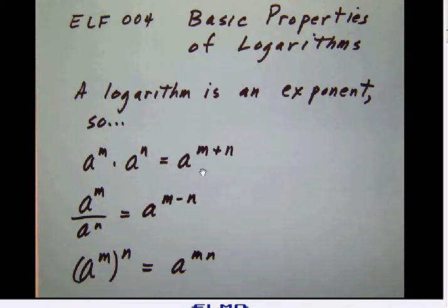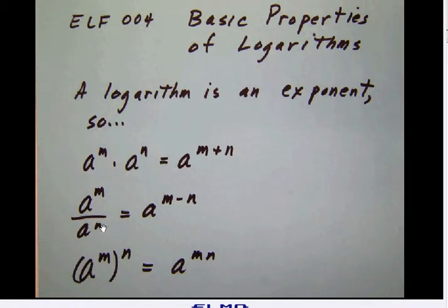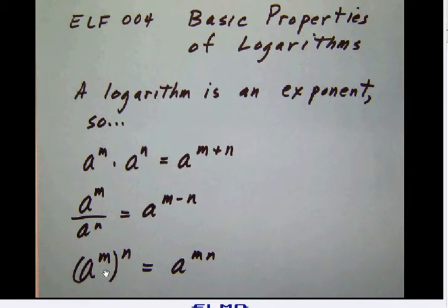From your most basic algebra class, if you are multiplying numbers together which have the same base, what you really do is add their powers — so in order to multiply, you add. Whenever you're dividing two numbers with the same base, you keep the base and subtract the powers: a to the m divided by a to the n is a to the m minus n. Another rule is the power-to-a-power rule: if you raise a number to a power and then raise the entire thing to another power, you multiply the exponents, giving a to the m times n.